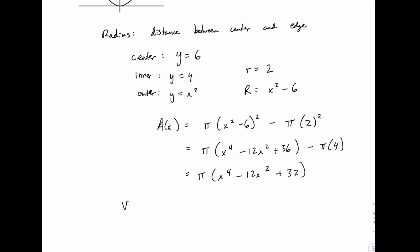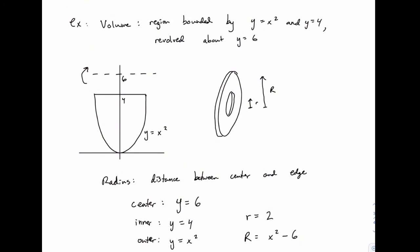Then to integrate, to find the area, we need limits of integration. So that's the last piece that we have to figure out. So we'll come back to the picture for that. And what we're looking for is the x values at the outer limits of this object. In other words, we're looking for where y equals x squared intersects y equals 4.